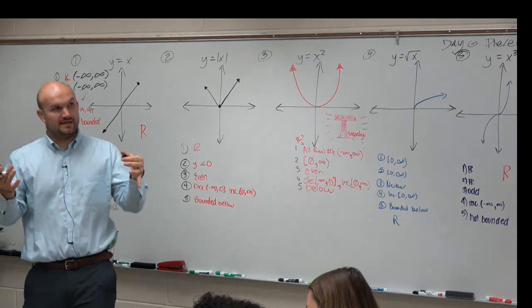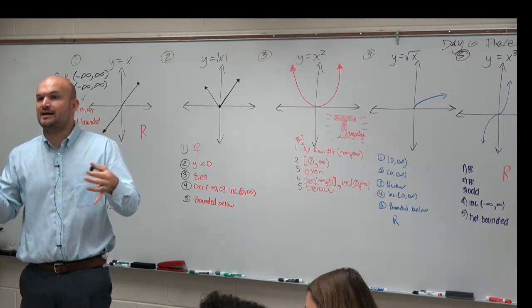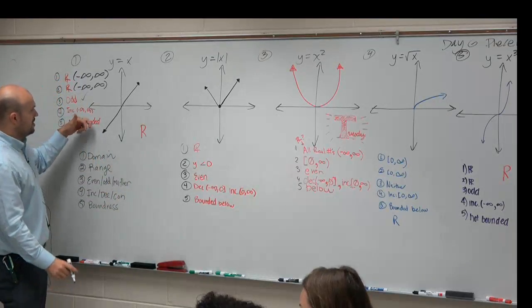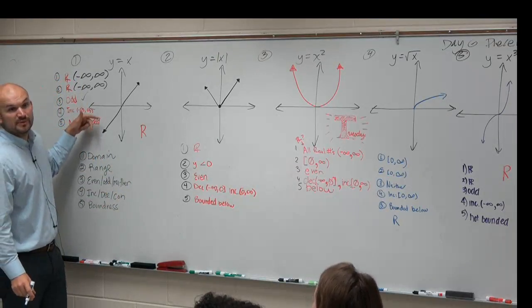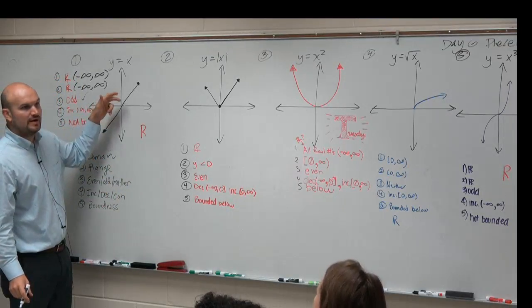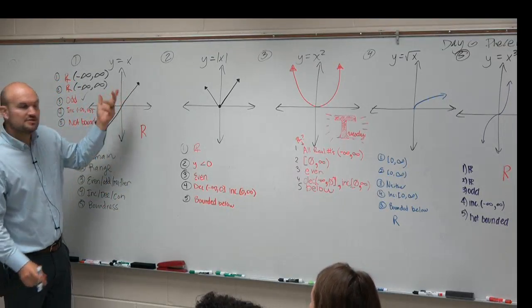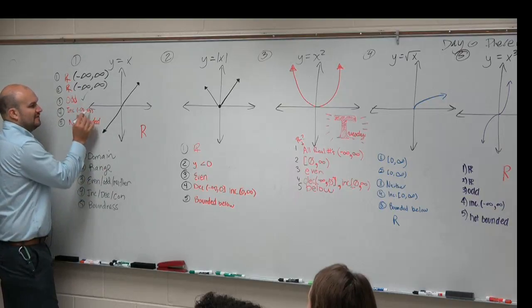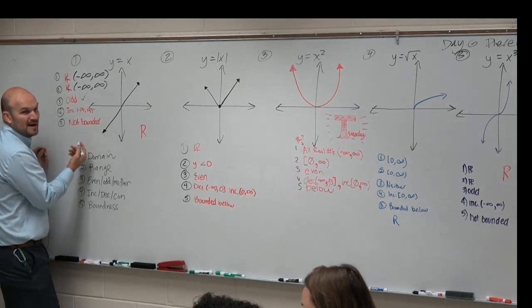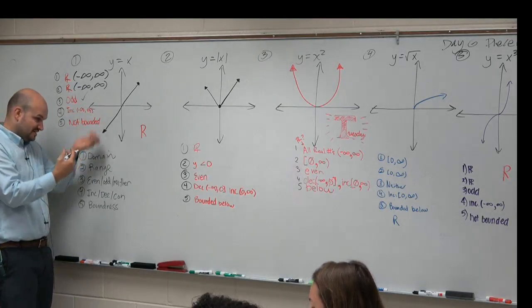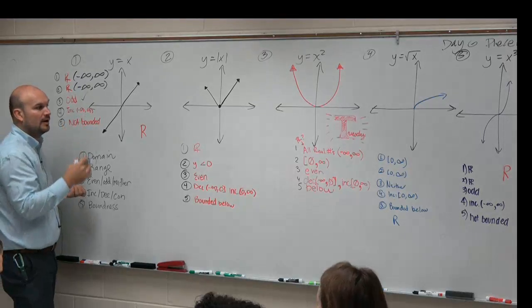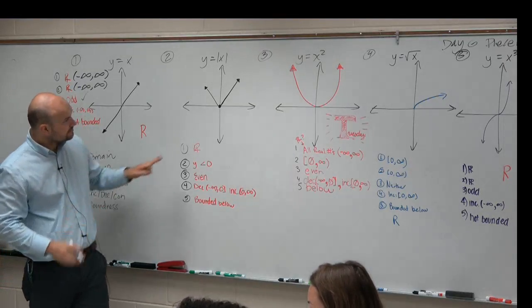Think of increasing like you're walking on a roller coaster. As you continue walking on the roller coaster from left to right, you're always going up. So the graph is increasing across negative infinity to infinity, and the graph is not bounded — it just continues going down and continues going up.